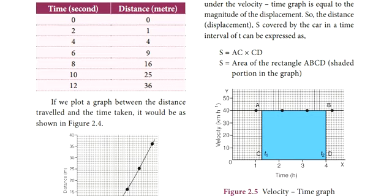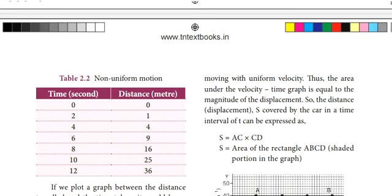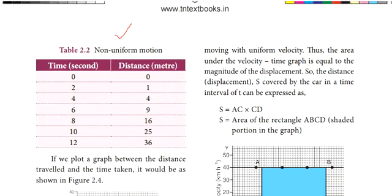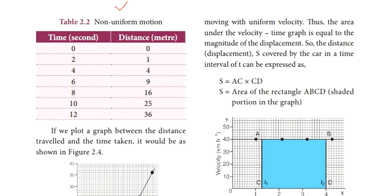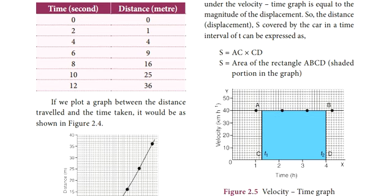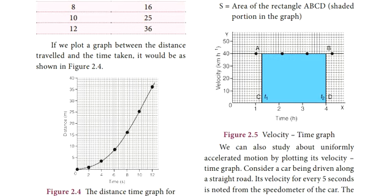Now let's see non-uniform motion. In the first 2 seconds, it is 1 meter; in the next 2 seconds, it is 3 meters; in the next 2 seconds, it is 5 meters. The distances are 1, 3, 5, 7, 9 — there is a uniform change in distance. This is non-uniform motion. When the change in distance is uniform — 1, 3, 5, 7, 9 — the acceleration is constant. This is called accelerated motion.